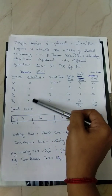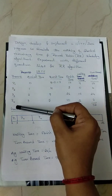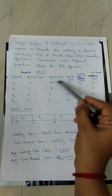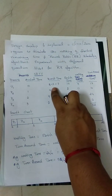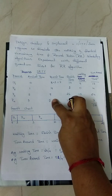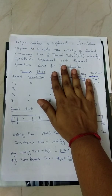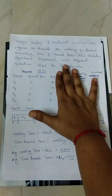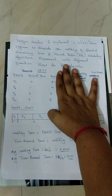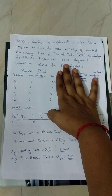3 respectively. Also consider the burst times given for these processes: P1 is 8, P2 is 4, P3 is 9, and P4 is 5. This is the initial data given, and on these processes we will apply preemptive Shortest Job First.